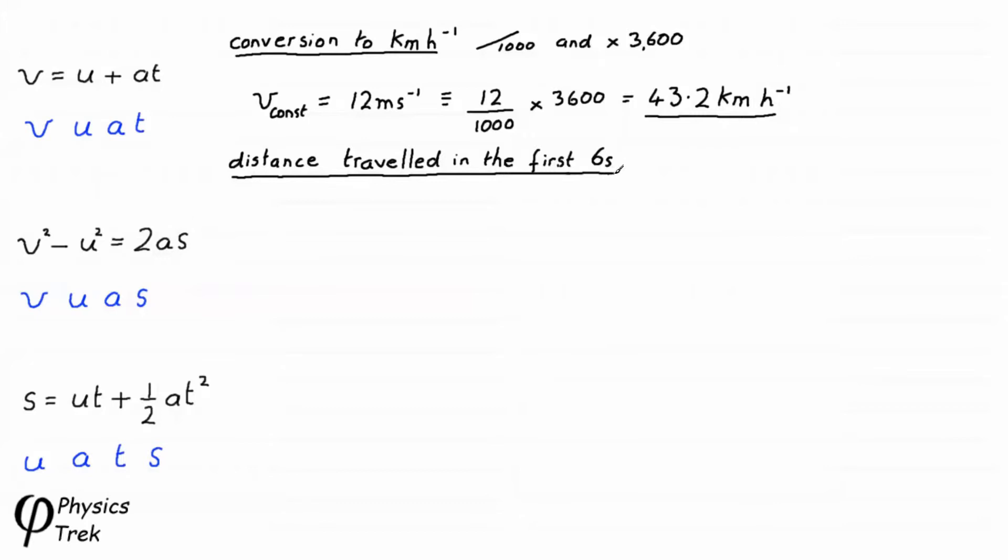Here we can simply use the equation where we take the average of the initial and final velocities and multiply by the time taken. So S = (u + v)/2 × t. Putting this in our symbols: (U₀ + V_const)/2 × tₐ. Putting the numbers in: (0 + 12)/2 × 6, which gives us 6 × 6, which gives us 36 meters.